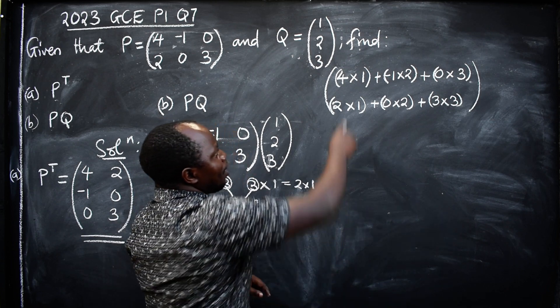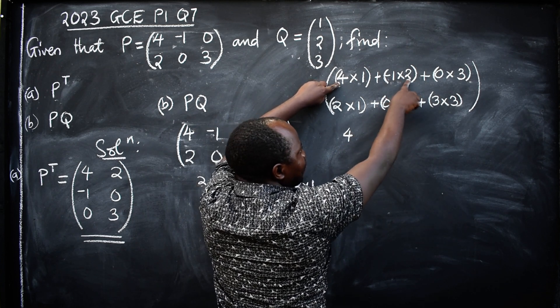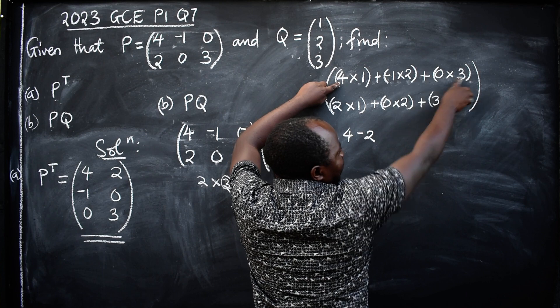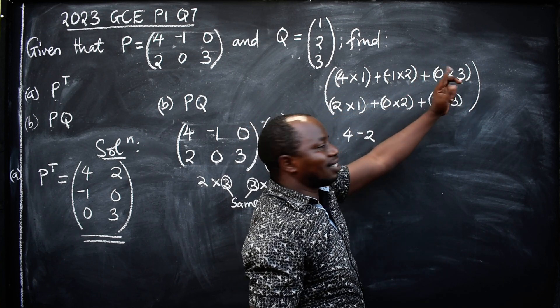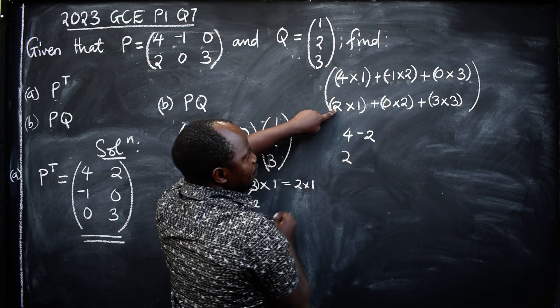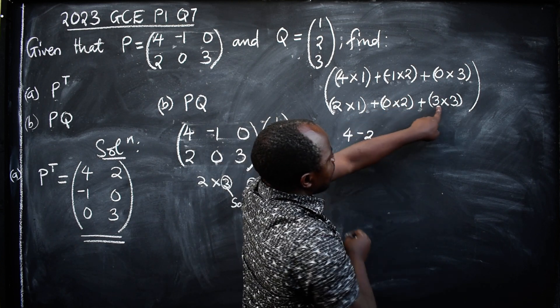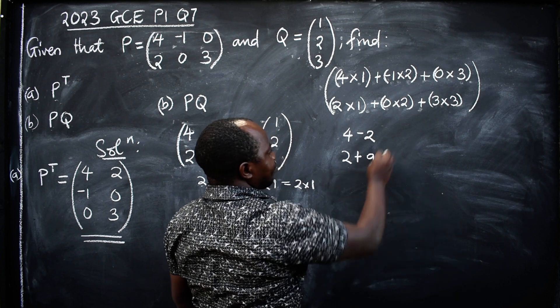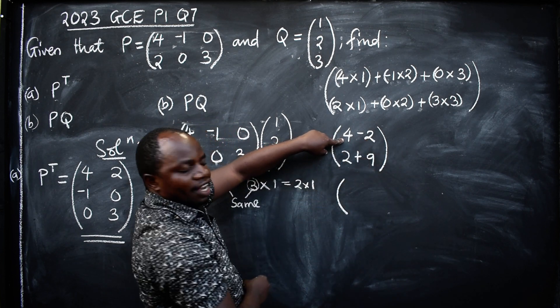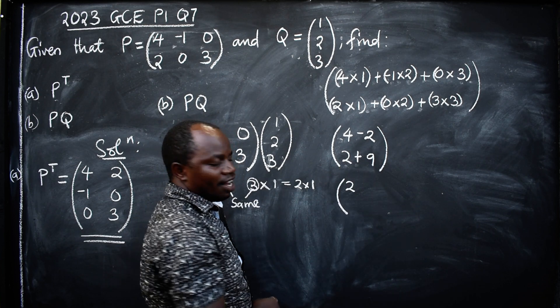Let's now simplify. 4 times 1, this will give us 4. -1 times 2, it will be -2. So that negative and this positive will be -2, then plus whatever we are going to get here will be 0. 0 times 3, that's 0. Down here we have 2 times 1 to be 2, plus what we have here is 0, so plus 3 times 3 is 9. So we have 9. We move on. What is 4 take away 2? The answer is 2. What is 2 plus 9? The answer is 11.